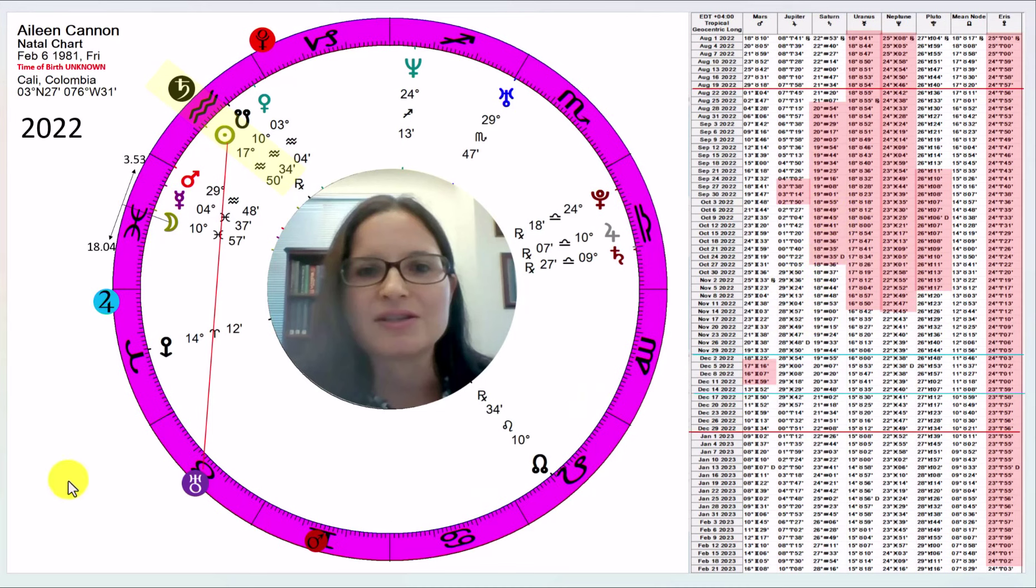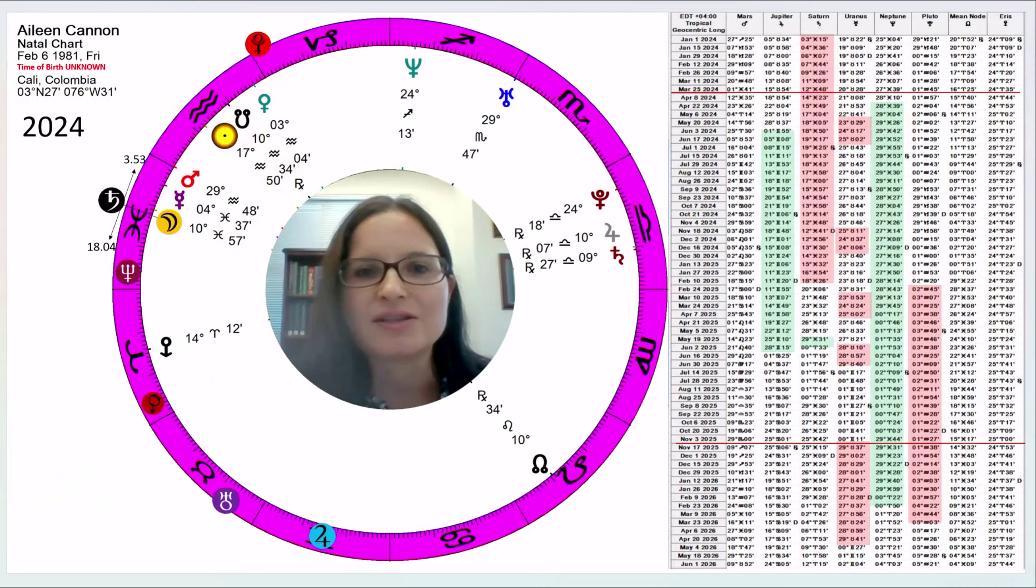However, the problem we're having now is that it means 2024. There are potential problems here now with the moon in Pisces. Saturn could still conjoin it, particularly if she's born in the second half of the day. And the deeper into the day, the more problematic. But then she could also be born earlier in the day, in which case wouldn't apply.